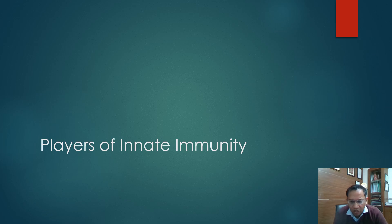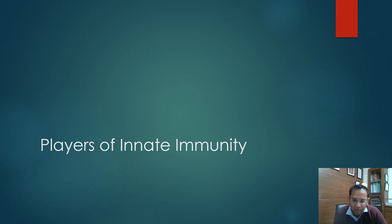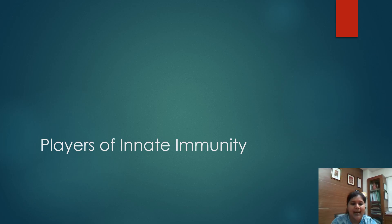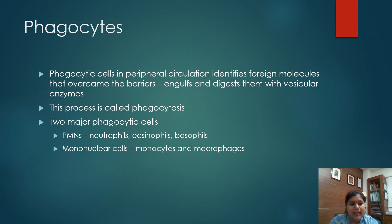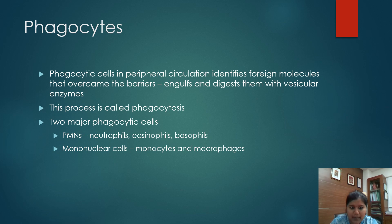Now coming to the players of innate immunity, I would like to call upon my colleague Dr. K. Jayagauri, who will take you through the players of innate immunity — the specific players which orchestrate our body's immunity. Hello everyone, in this session we will be seeing about the players of innate immunity. The main players are the phagocytes — phagocytic cells present in peripheral circulation that identify foreign molecules which overcame the initial physical and biochemical barrier, engulf them, and digest them with their vesicular enzymes. This process is known as phagocytosis.